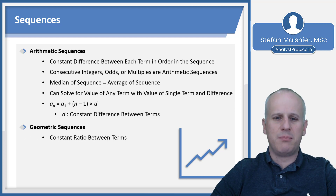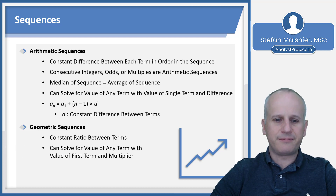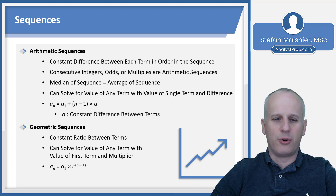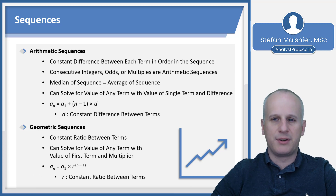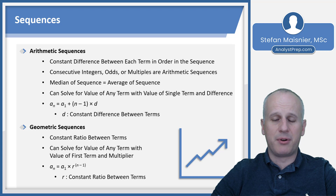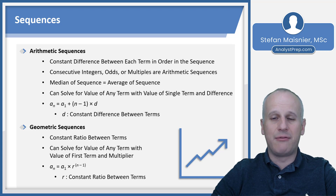A geometric sequence is where you have a constant ratio between the terms — what you may know as an exponential increase, where you multiply something by a constant value. You can solve for any term with the value of the first term and the multiplier. The formula is: a_n equals the first term, a subscript 1, times r to the n minus 1 power, where r is the constant ratio. You multiply that value one fewer times than the term number, because you don't multiply for the first term, but every term after that you do.